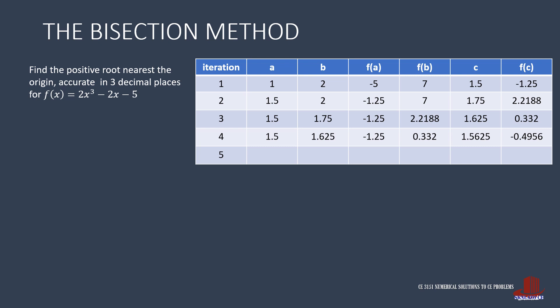Proceed to the fifth iteration, starting with A as 1.5625 and F of A as negative 0.4956. B remains the same as 1.625 and F of B as 0.332. Now compute for C as 1.5625 plus 1.625 divided by 2 to get 1.5938. Plug this into the equation as 2 times 1.5938 cubed minus twice of 1.5938 minus 5 and get negative 0.0911. The negative sign of F of C means that A should be updated by the recently solved C.